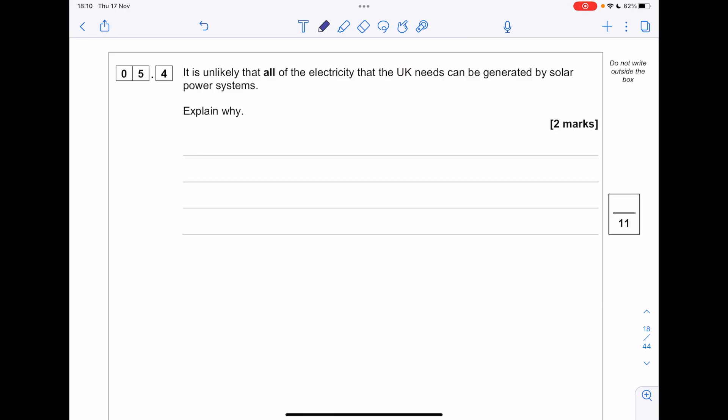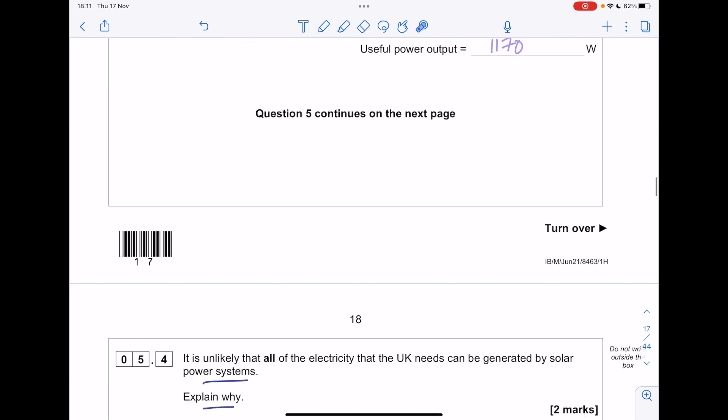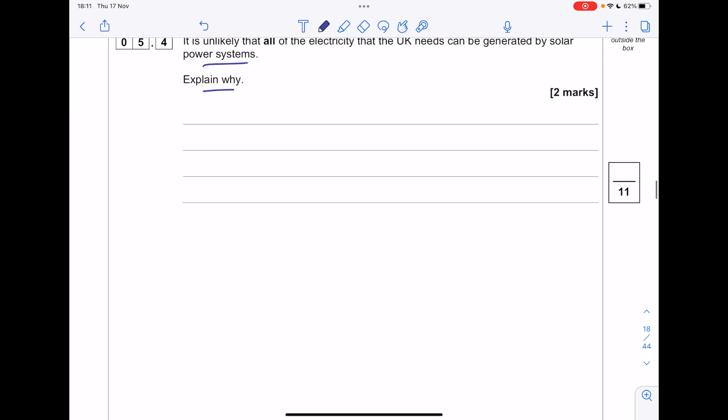It is unlikely that all the electricity that the UK needs can be generated by solar power systems. Explain why. Use the information above. Look, the efficiency of these solar cells is dreadful. It's only 0.15. So in terms of how many solar panels you would need to meet the requirements of the UK, you need a huge amount of land. And quite frankly, it's not possible.